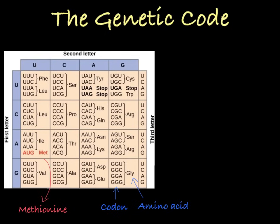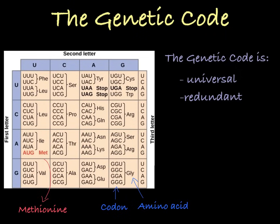This code is the same code used in translation for all living organisms — in this way, the code is universal. When we look at this chart, we notice a few things. First, the code is redundant: multiple different codons will code for the same amino acid. For example, codons UUU and UUC both code for the amino acid PHE, which is phenylalanine. We also notice that the code is nonambiguous — each codon codes for one and only one amino acid. There's no question which amino acid is going to be coded for by a single specific codon in the mRNA.